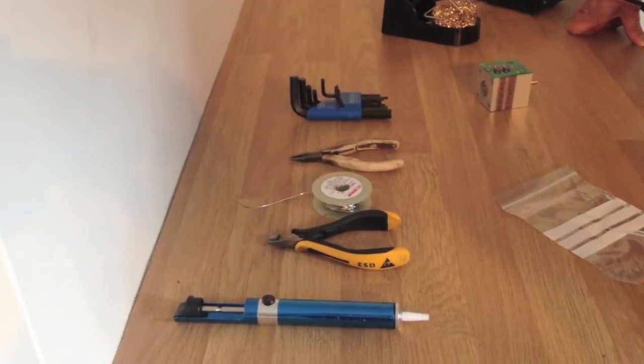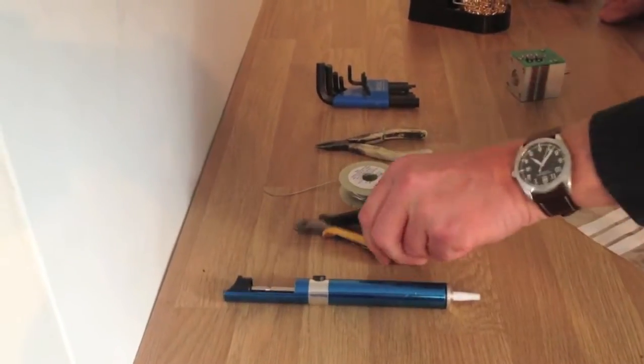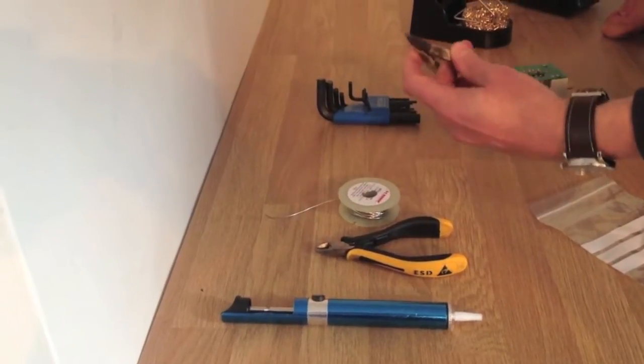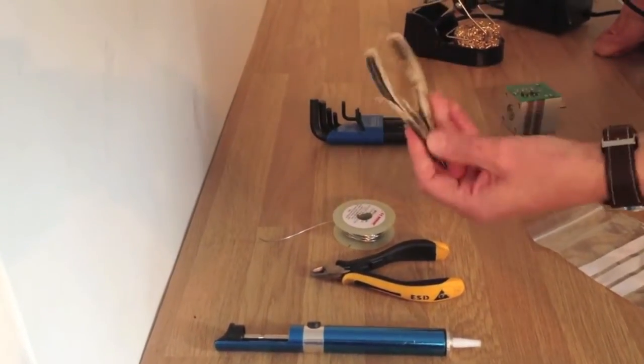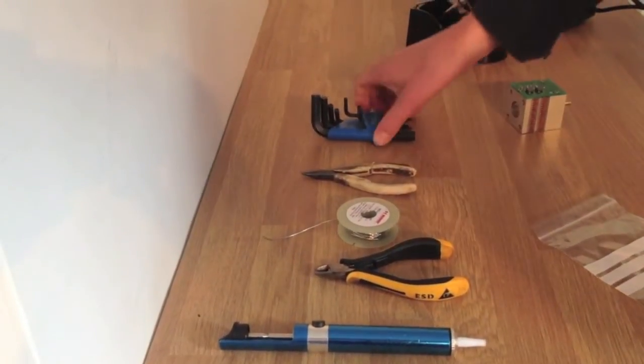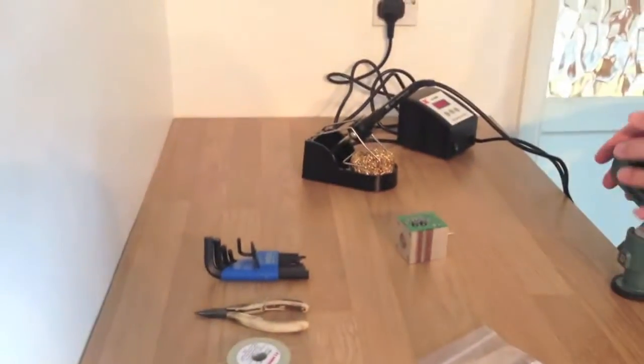Here's your list of tools for the job. Solder sucker, cutters, solder, snipe nose pliers. These I've had for about 20 years, brilliant. Allen keys, metric size, soldering iron and vice.